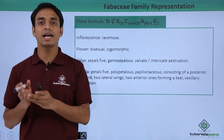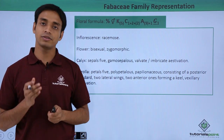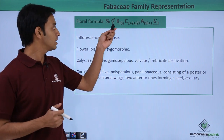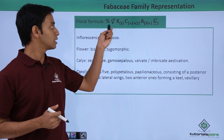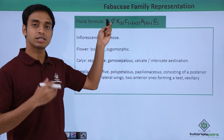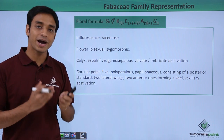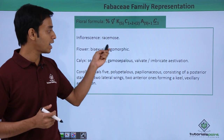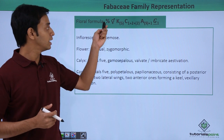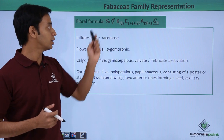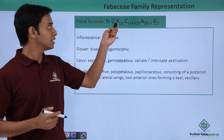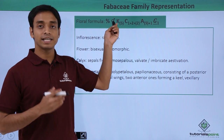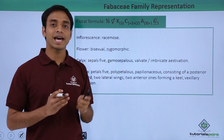The flowers are bisexual, meaning a single flower has both the male and the female reproductive structures, represented by the bisexual symbol. So the flowers are bisexual and zygomorphic. Now let's see 'K' — K means calyx, which is the sepals.